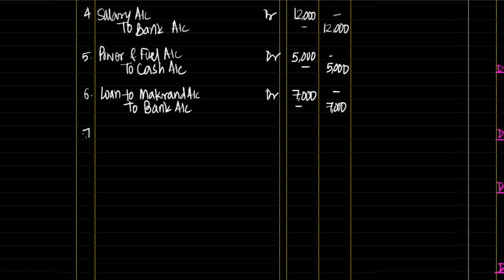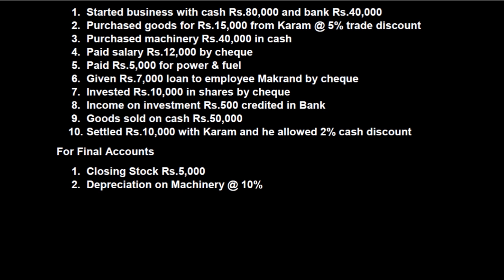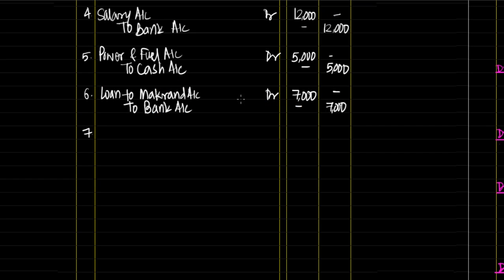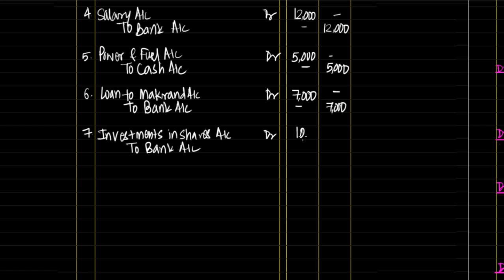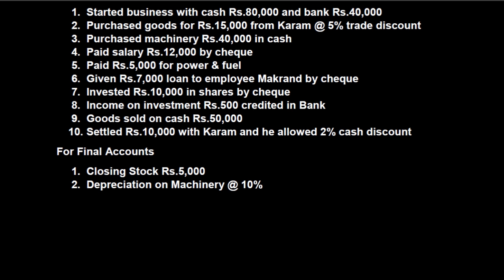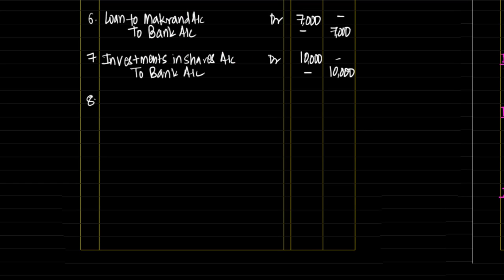We are not writing narration because it is not asked in the question, but in journal below each and every transaction narration should be written. Seventh: invested Rs. 10,000 in shares by cheque. Investments in shares is an asset for us, so debit real account rule — investments in shares account debit to bank account Rs. 10,000. Next: income on investment Rs. 500 credited in bank. Money is coming into the business — it is our income — bank account debit, credit income on investment account Rs. 500.